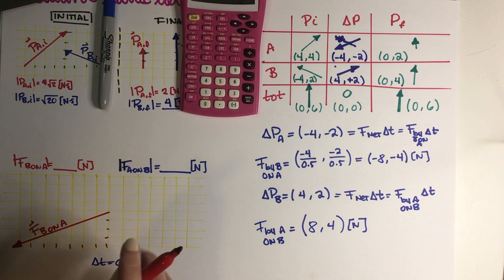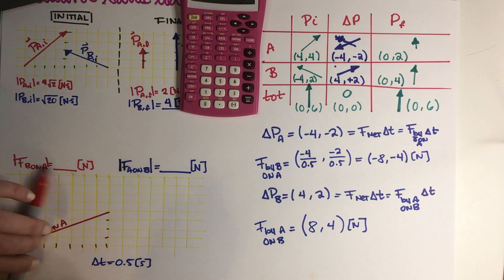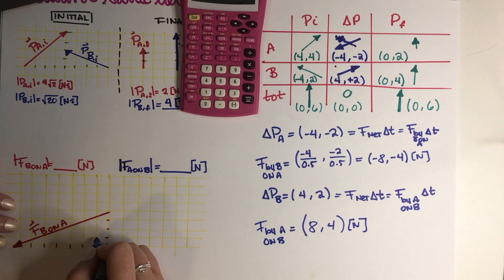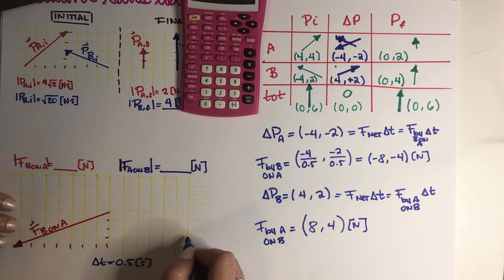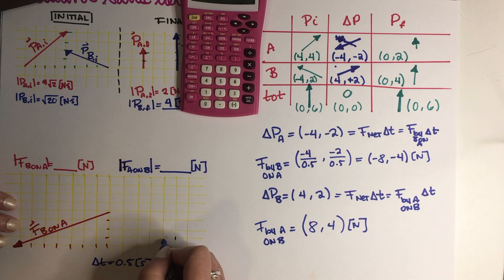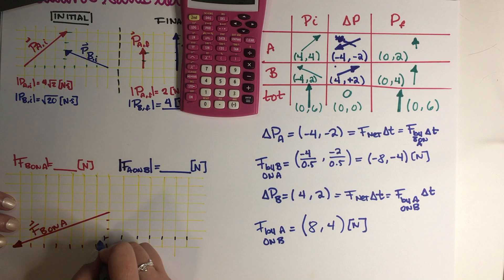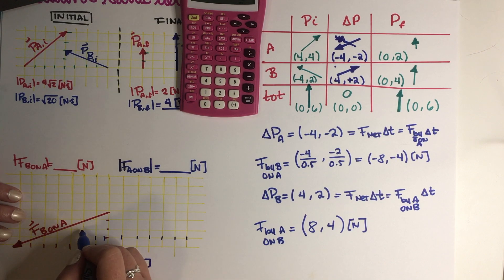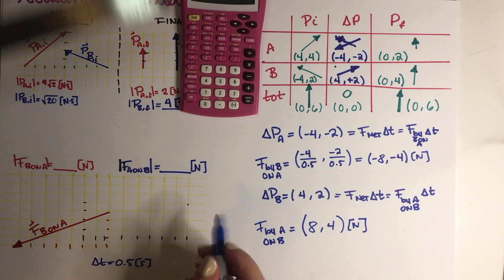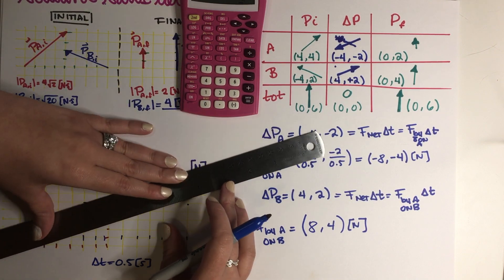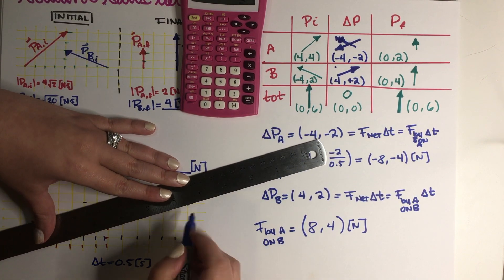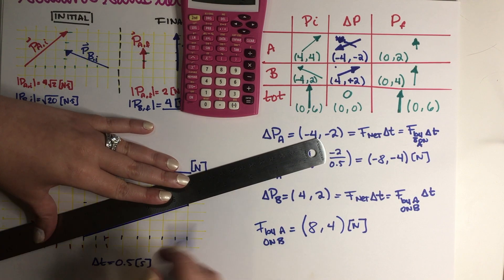And then the other one is going to be, let's see. 1, 1, 2, 1, 2, 3, 4, 5, 6, 7, 8. And then 1, 2, 3, 4. So the other one is going to be a vector that looks like this.